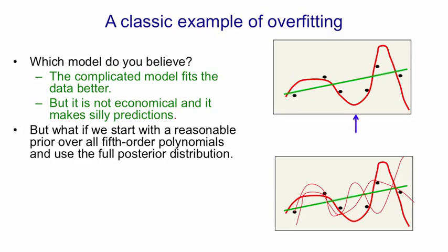And then we compute the full posterior distribution over fifth order polynomials. I've shown you some samples from this distribution in the picture, where a thicker line means higher probability in the posterior. So you'll see some of those thin curves miss a few of the data points by quite a lot, but nevertheless they're quite close to most of the data points.